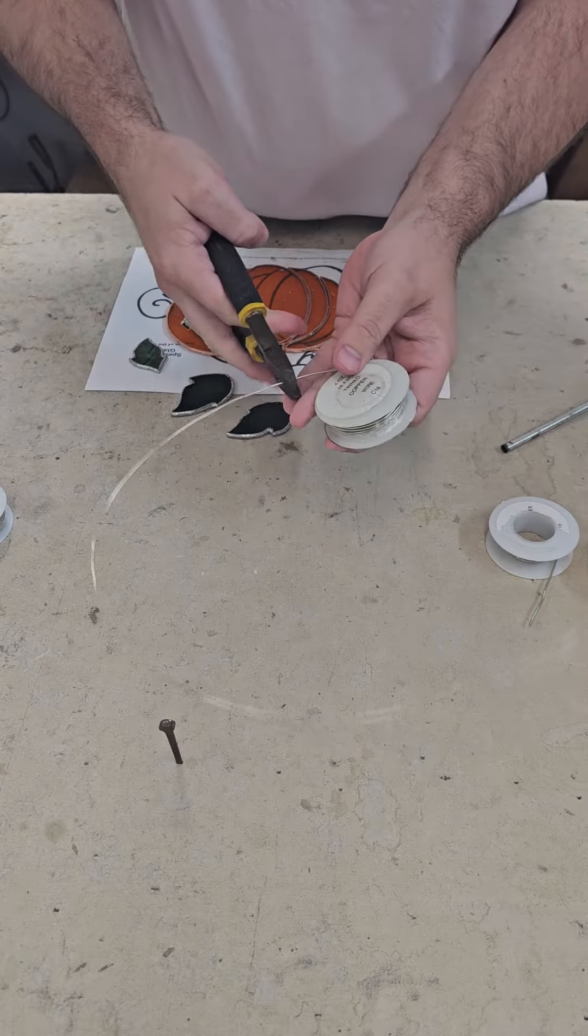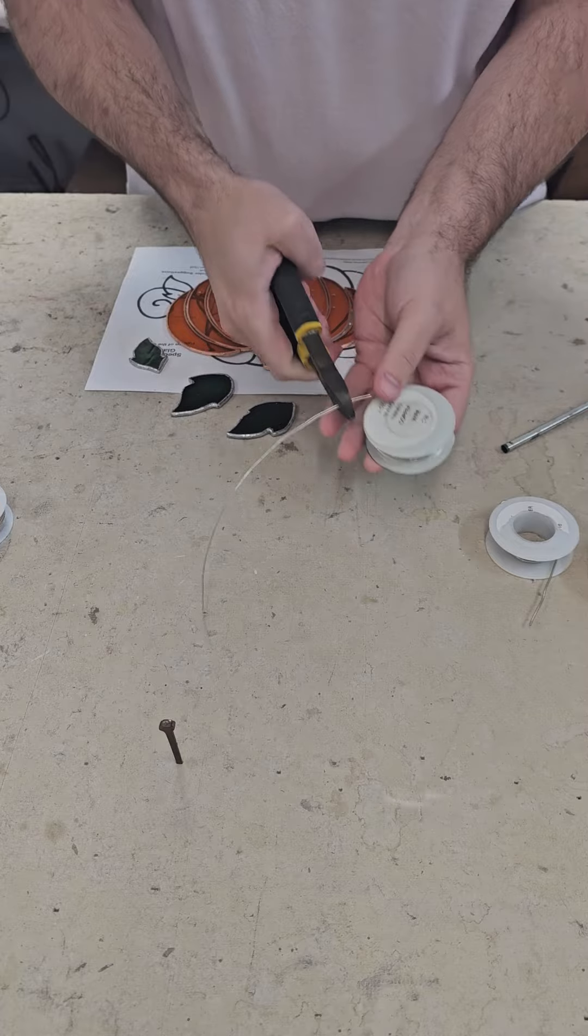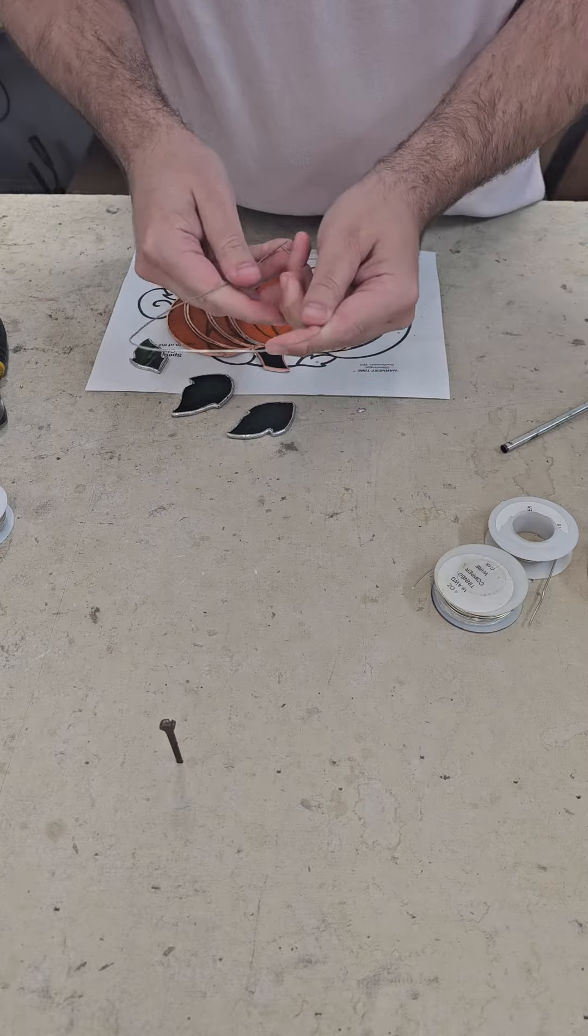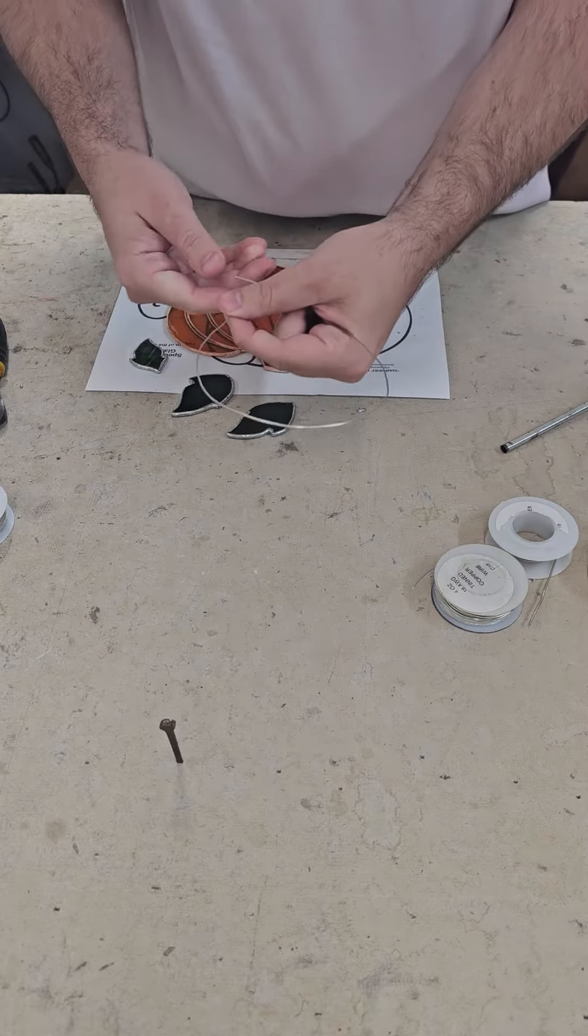The thing I want to do is pull some out, just a good length, and snip it. Just use your trusty old wire cutters. And then go ahead and make a U with it.